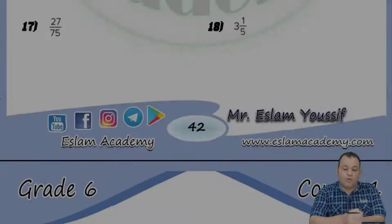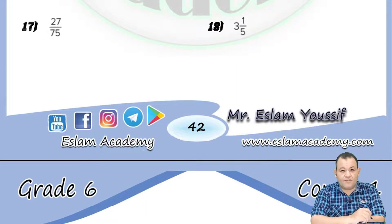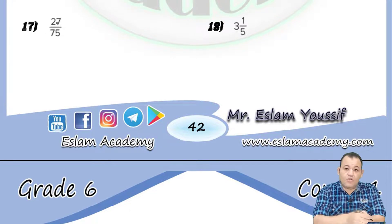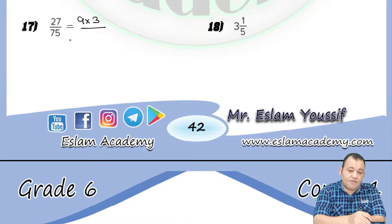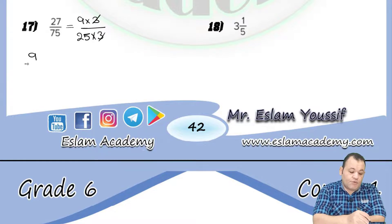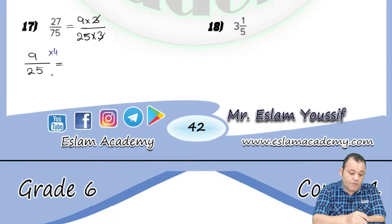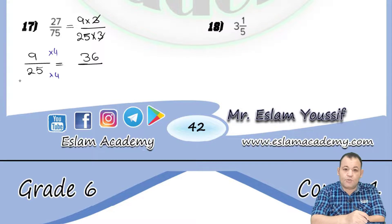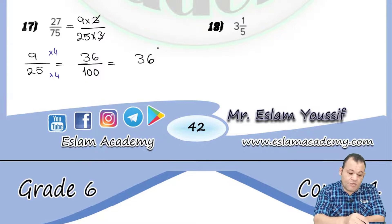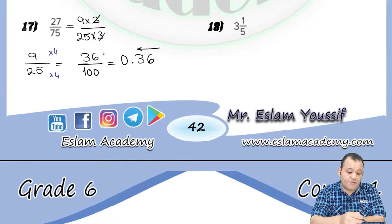In question number seven, we have twenty-seven over seventy-five. Seventy-five is not one of the golden numbers, but we can simplify: twenty-seven equals nine times three, and seventy-five equals twenty-five times three. Cancel the threes to get nine over twenty-five. Since the denominator is now twenty-five, multiply by four: nine times four equals thirty-six, and twenty-five times four equals one hundred. Write thirty-six, count two places from right to left, put the decimal point — the answer is 0.36.